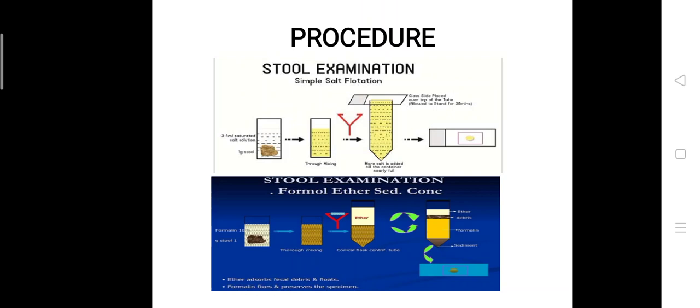Add 10 ml of ethyl acetate and shake the tube vigorously. Centrifuge at 450 grams RCF for 10 minutes, after which four layers should appear: a top layer of ethyl acetate, the plug of debris, a layer of formalin, and the sediment.